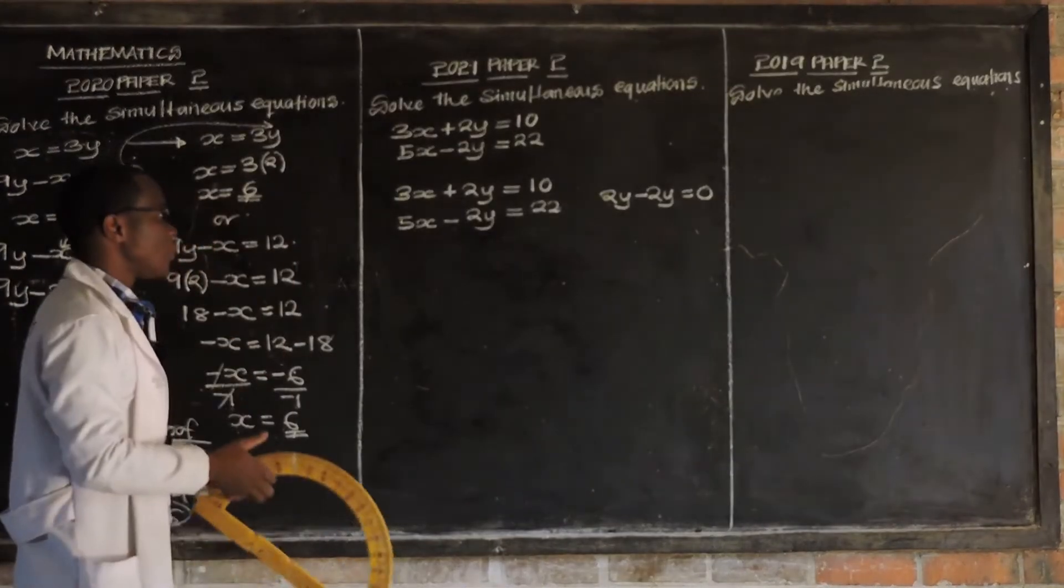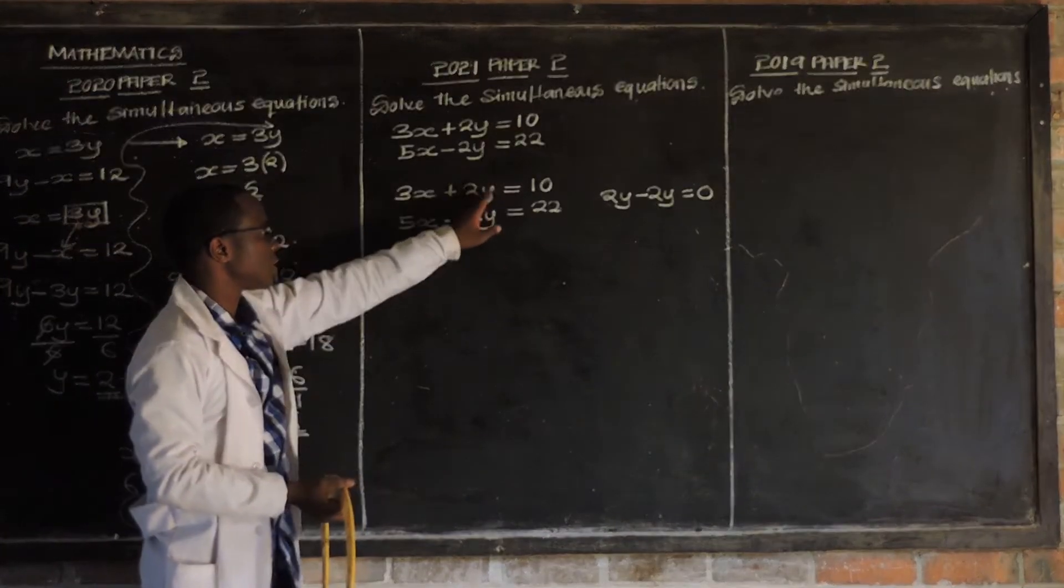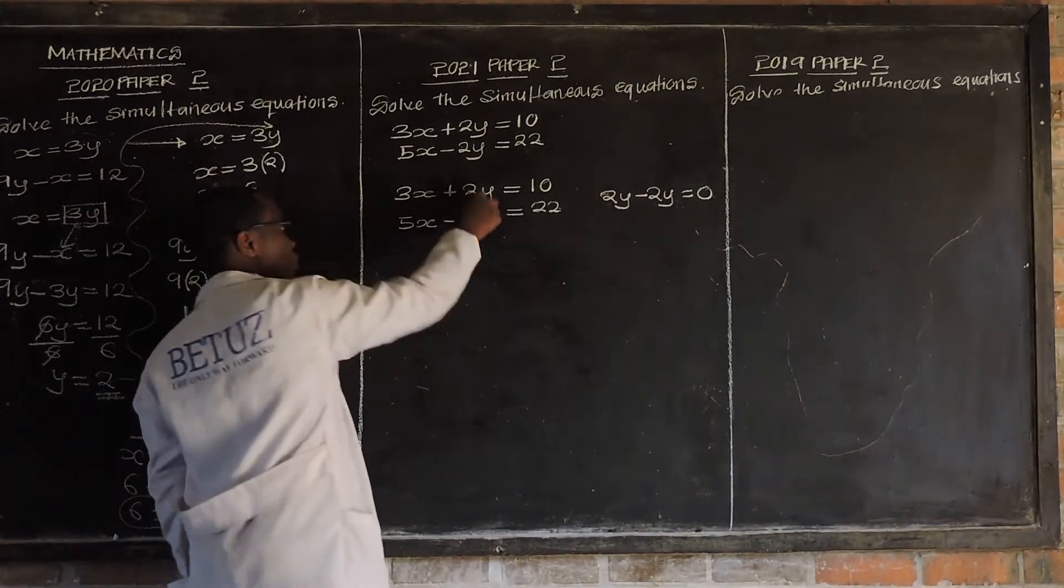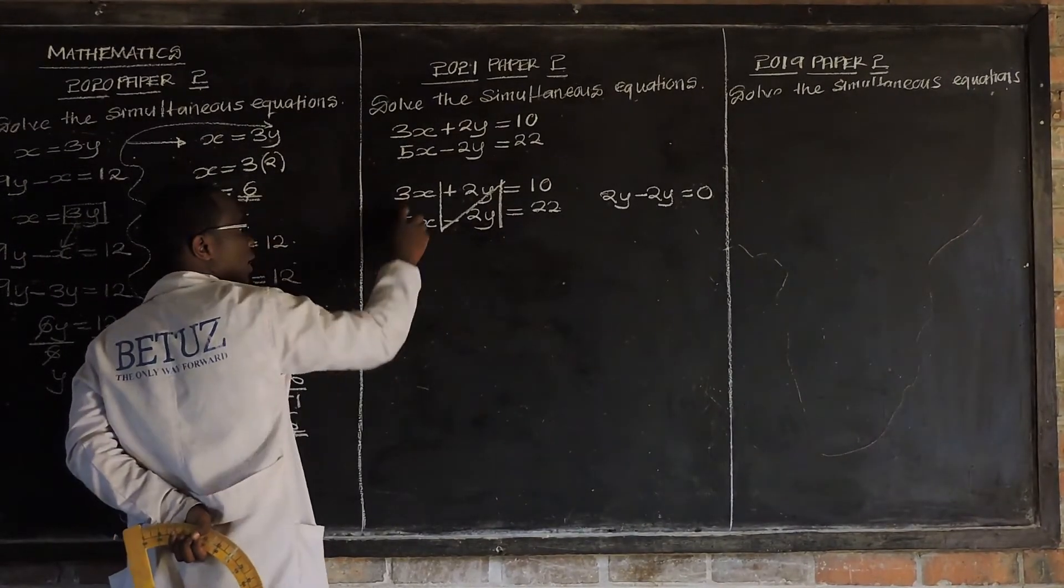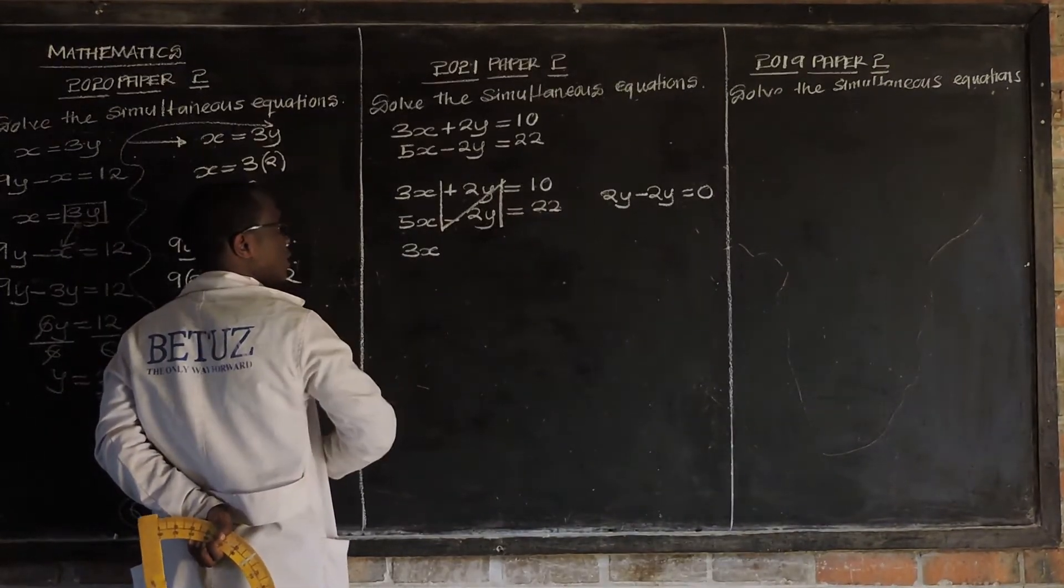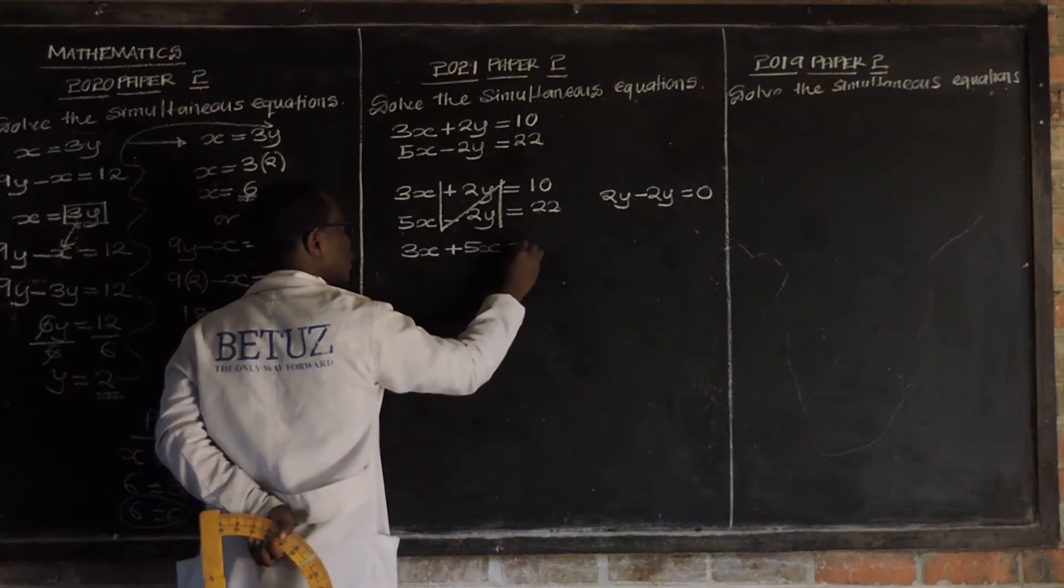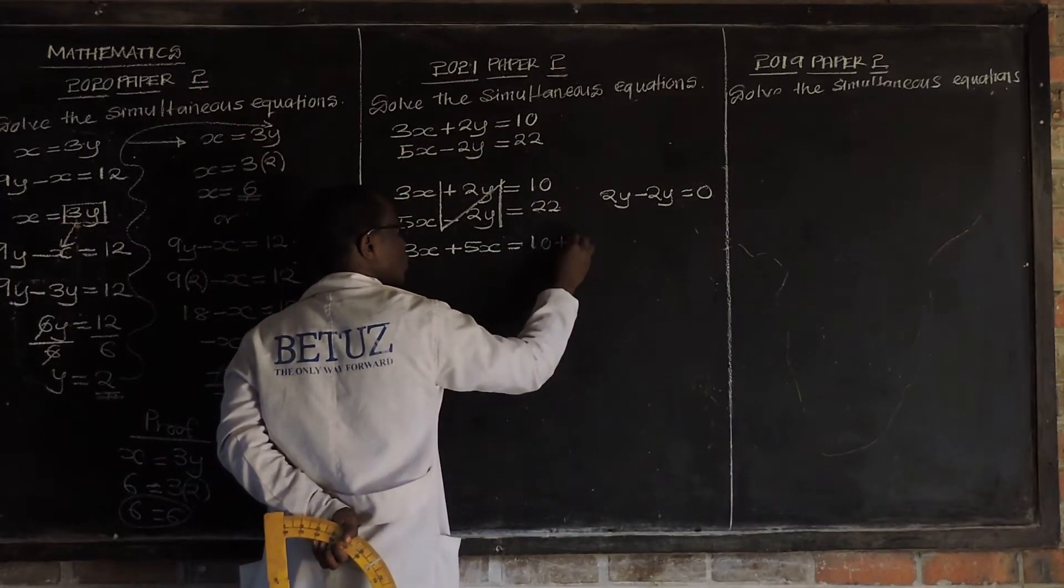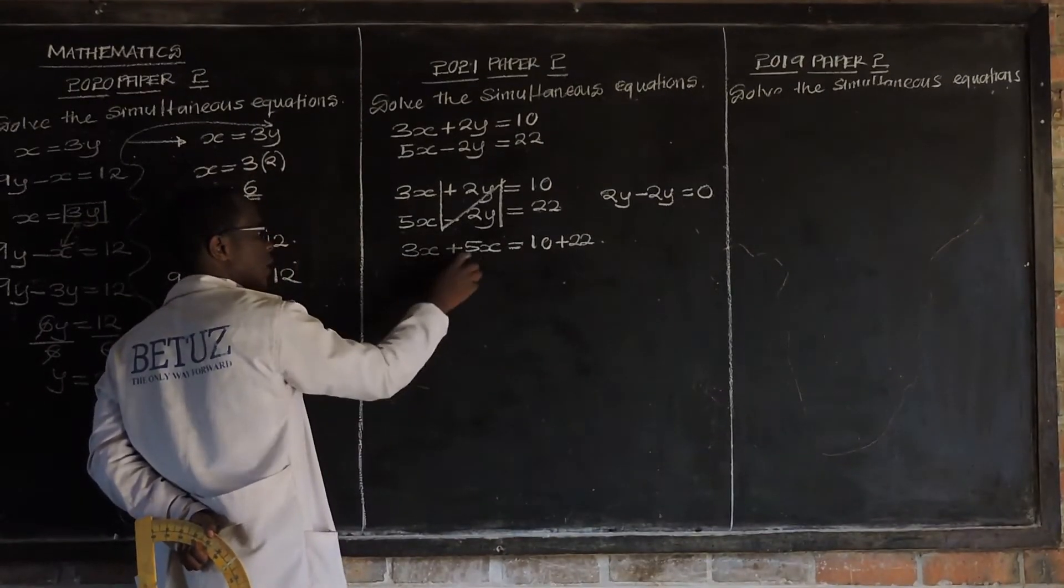So, when we come across the equation, the simultaneous equation is like this one variable. The same terms in between and then these terms are for different signs. Just add these two. Just do this. Just add these two. Then you add this. Simply add this.